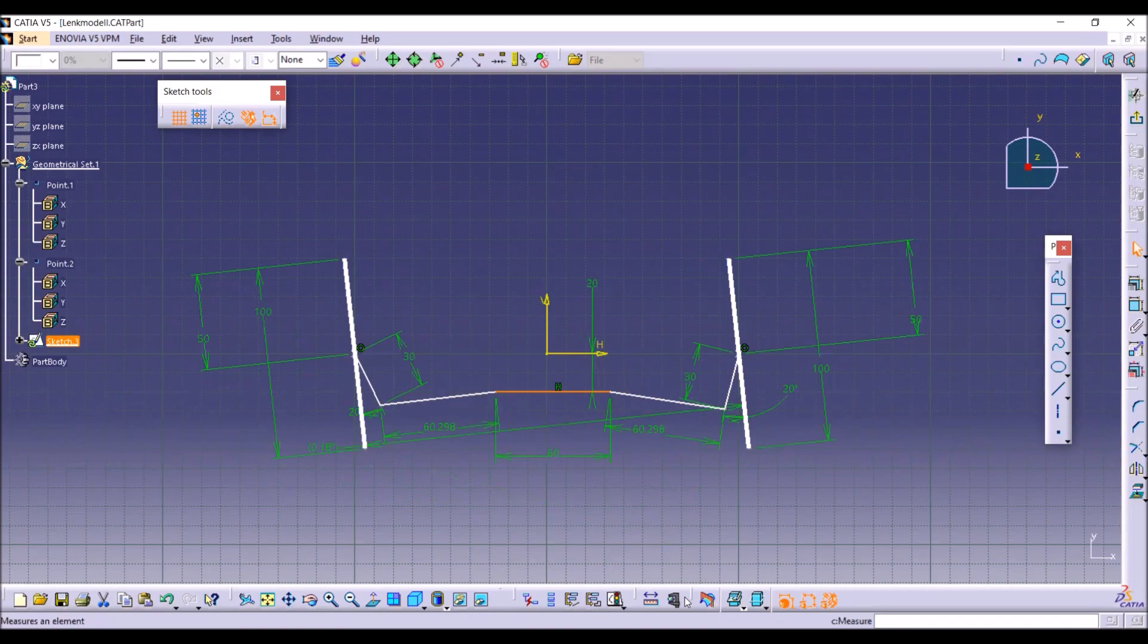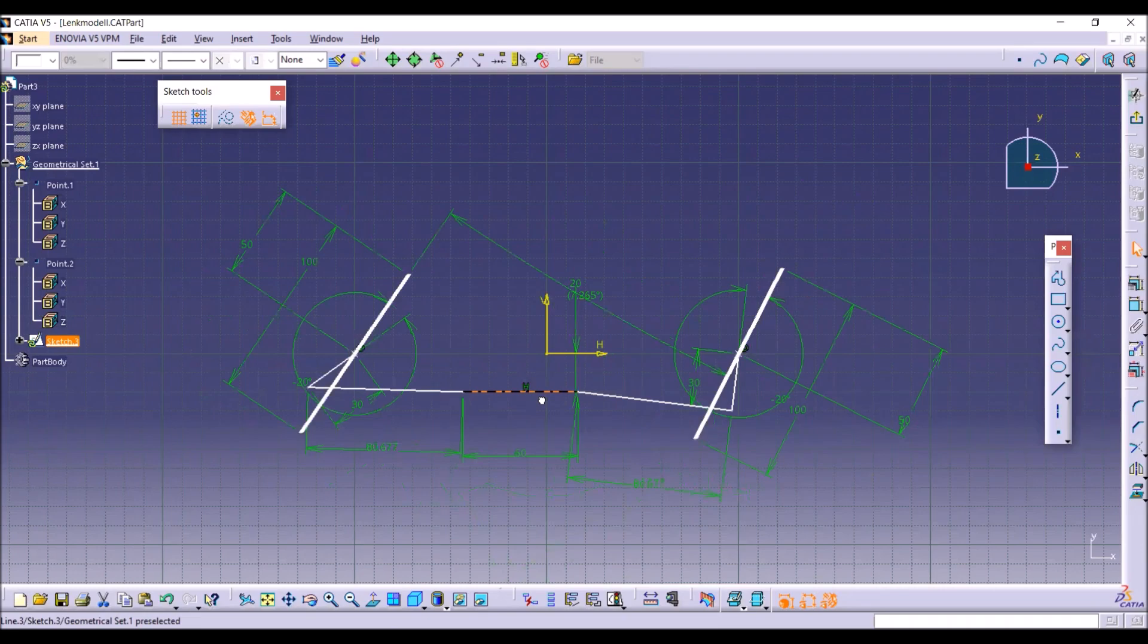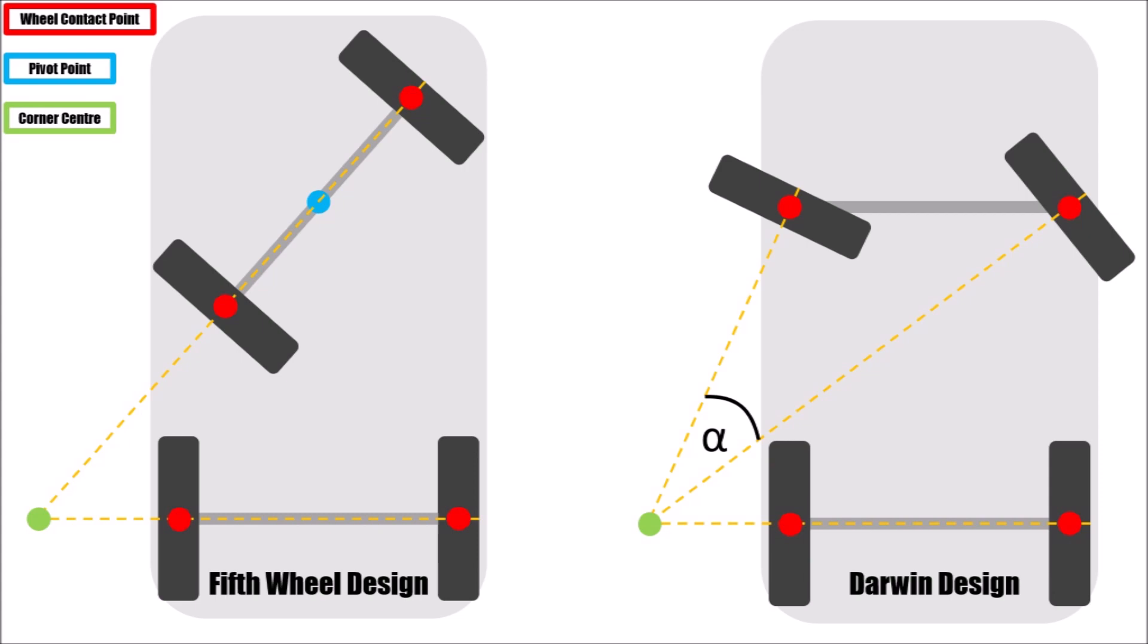And just for fun, let's point the steering arms outside. Now the outside wheel is turning faster than the inner wheel, but that's usually not what we want.